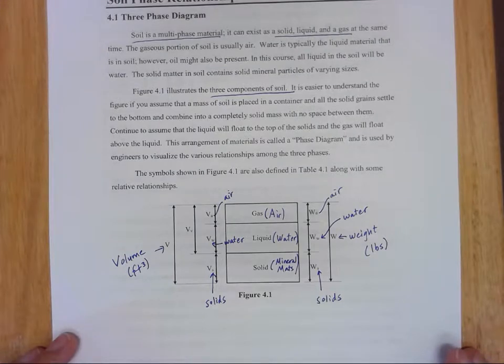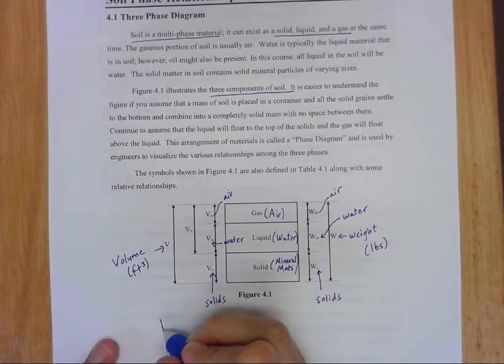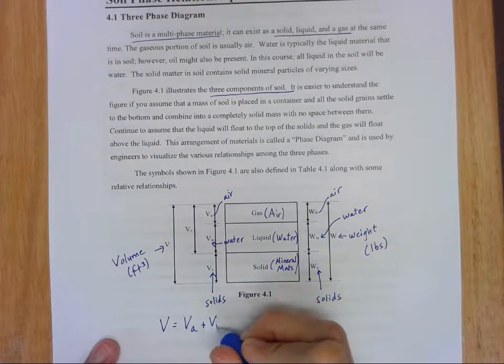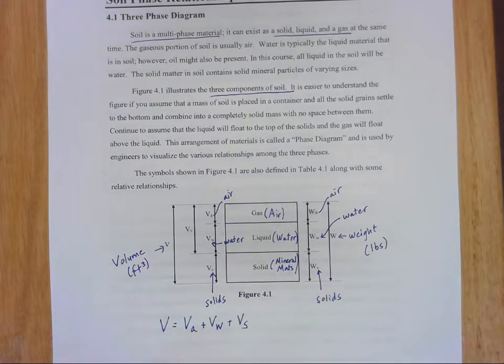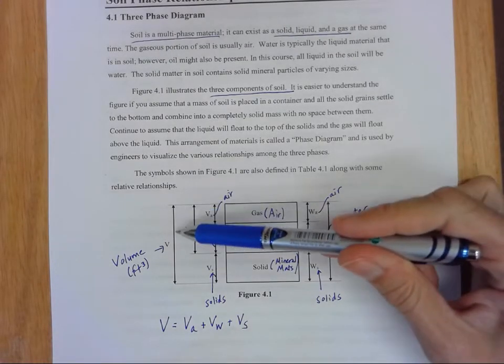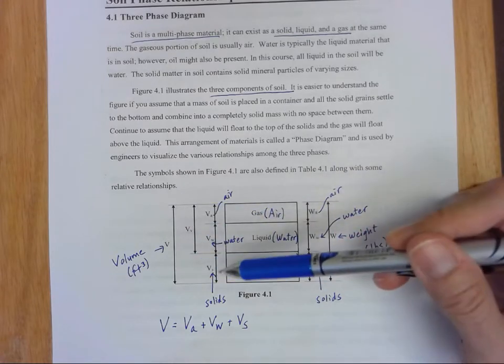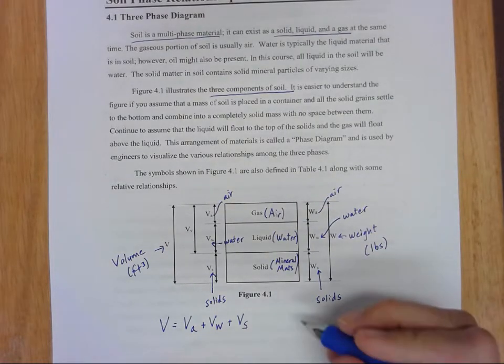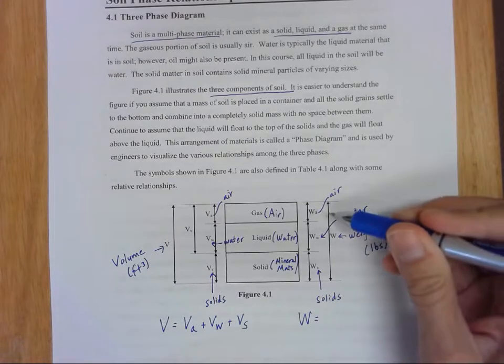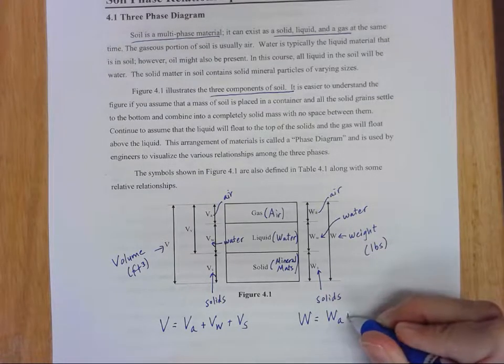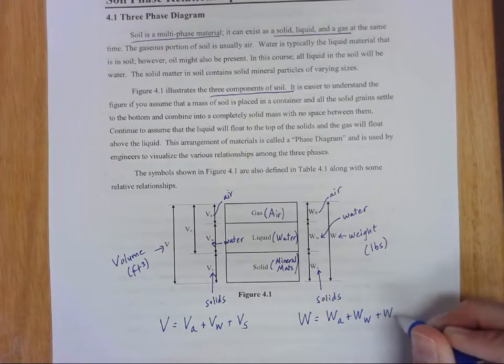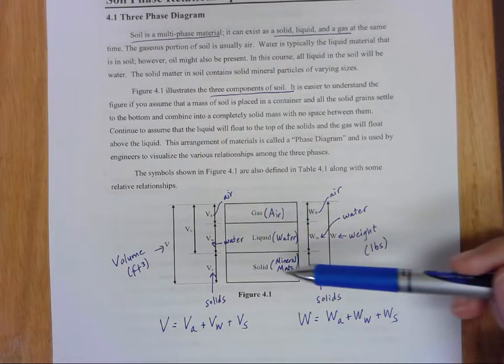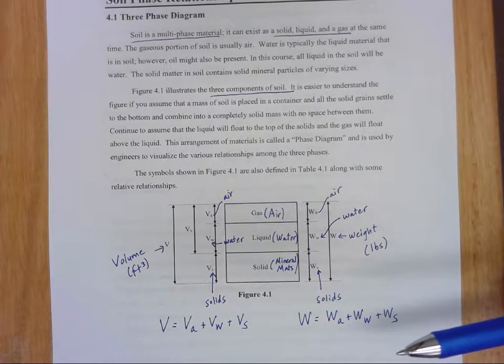So just looking at this diagram as it appears at the bottom of the page can get us to a couple formulas right away. Our total volume, our big V is going to equal the volume of the air, plus the volume of the water, plus the volume of the solids. And our total weight W equals Wa plus Ww plus Ws.